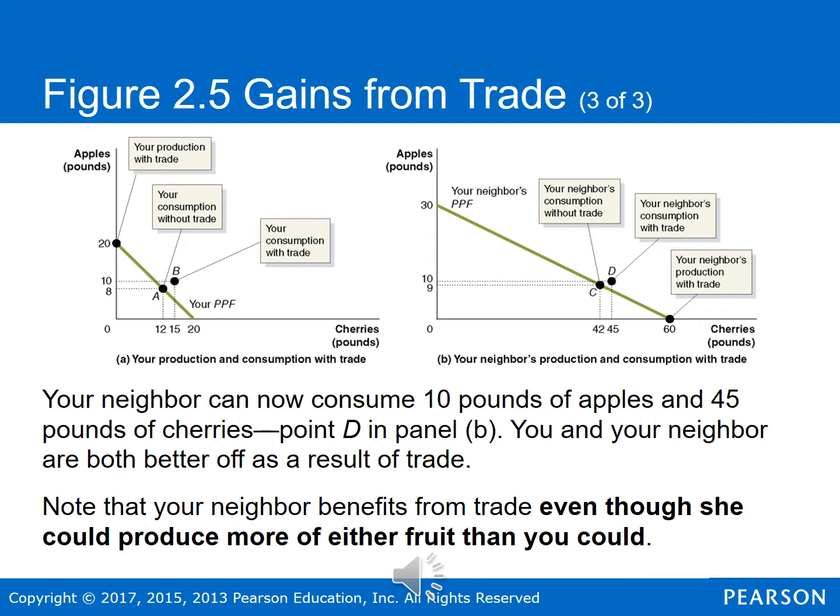So both of you have been made better off by engaging in trade. Even though your neighbor could produce more of either fruit than you could, your neighbor still benefits from trade. This highlights the gains we have from specializing and then engaging in trade.